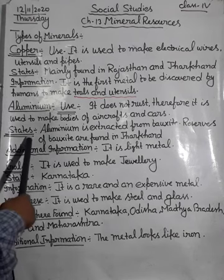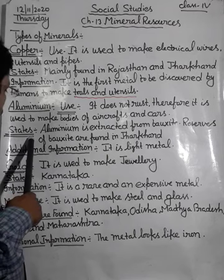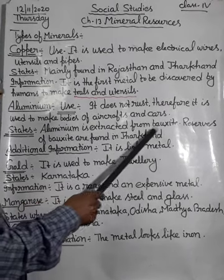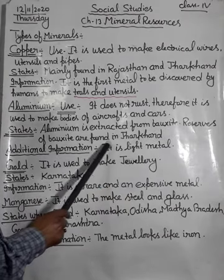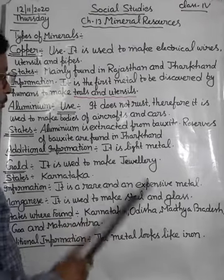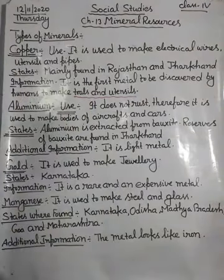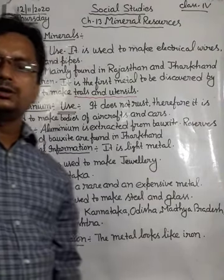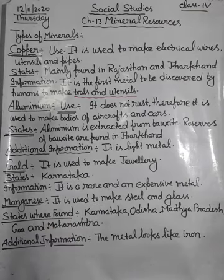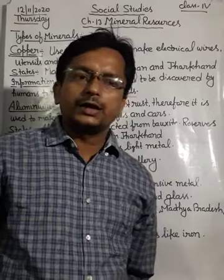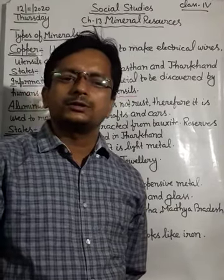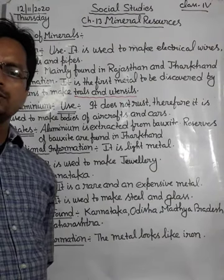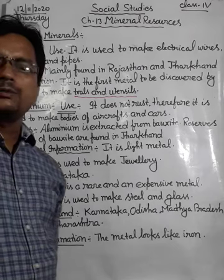Some states are given here where this metal is found. Aluminum is extracted from bauxite — extracted means to remove. Reserves of bauxite are found in Jharkhand. For additional information: aluminum is a very light metal, so it gets heated in very less time, which is why we use aluminum utensils in our kitchen.